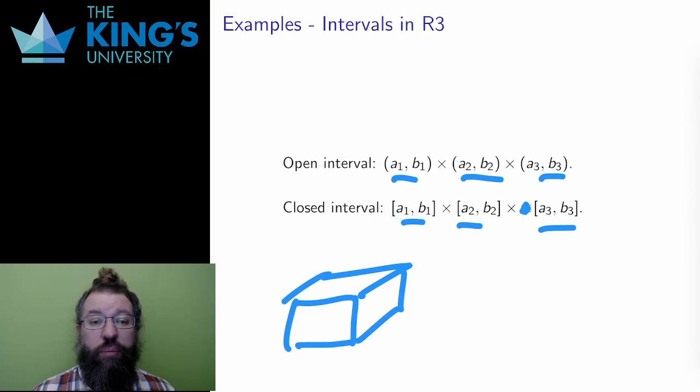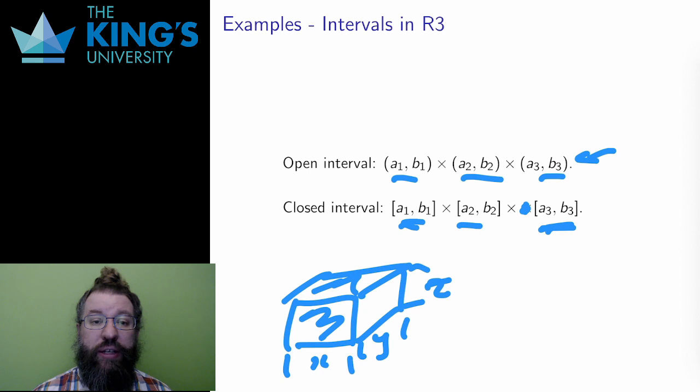This notation means that the x-coordinate is between a1 and b1, the y-coordinate between a2 and b2, and the z-coordinate between a3 and b3 for this interval in R^3. The first of these is an open interval. It doesn't contain any of the faces, any of the panels of the rectangular prism. But the second is a closed interval. It does contain all of those edges and faces and sides of the rectangular box.